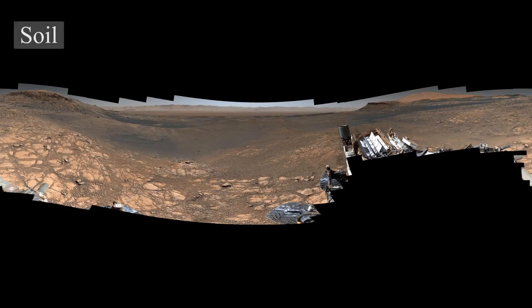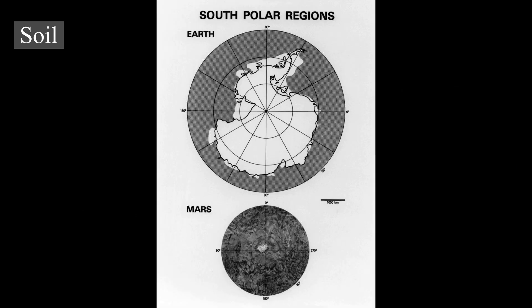The Phoenix lander returned data showing Martian soil to be slightly alkaline and containing elements such as magnesium, sodium, potassium, and chlorine — nutrients found in soils on Earth that are necessary for the growth of plants. Experiments performed by the lander showed that the Martian soil has a basic pH of 7.7 and contains 0.6 percent of the salt perchlorate, concentrations that are toxic to humans.